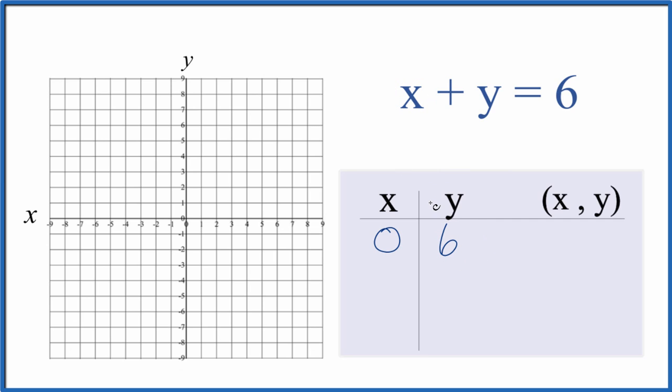We can choose any values for x, but it's good to choose values that will fit on our graph. So let's say x is 1. If x is 1, then 1 plus y equals 6. Subtracting 1 from both sides, y equals 6 minus 1, which is 5.